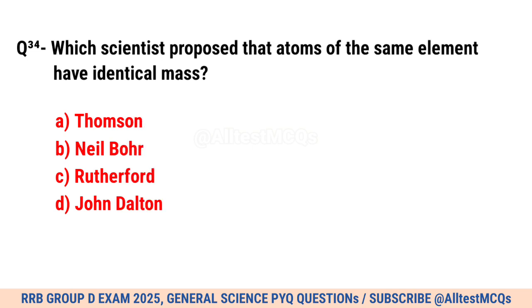Question No. 34. Which scientist proposed that atoms of the same element have identical mass? Correct option is D. John Dalton.